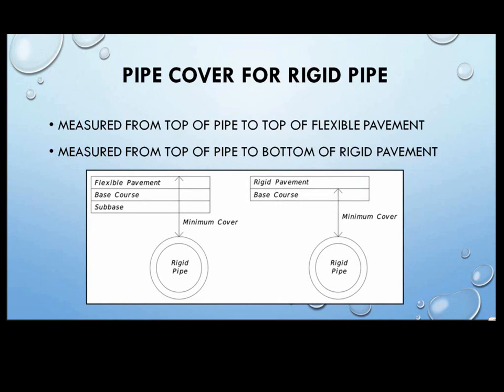Now looking at rigid pipe, which is concrete pipe — this is actually opposite to the flexible pipe. The minimum cover height is measured from the top of the rigid pipe to the top of the flexible pavement. The maximum cover control point did not change from the 205 standard index — it's still measured from the finished grade to the top of the pipe.